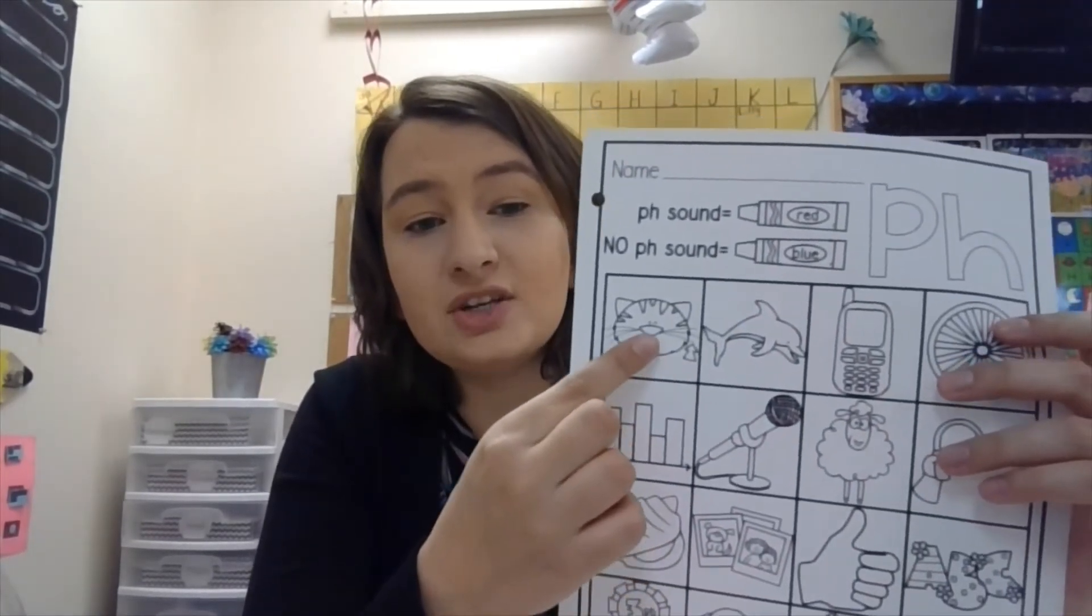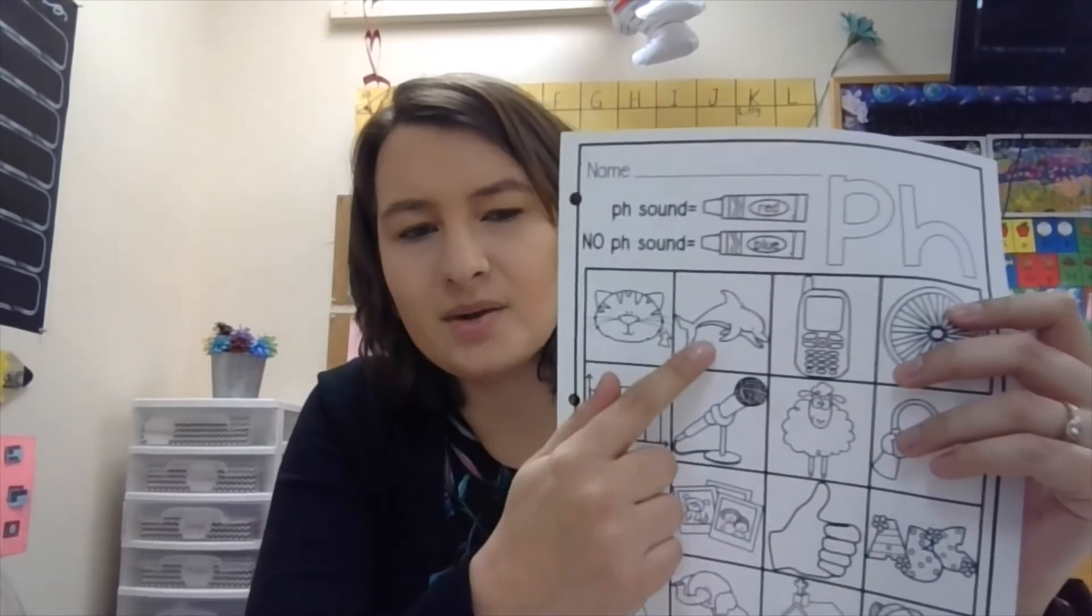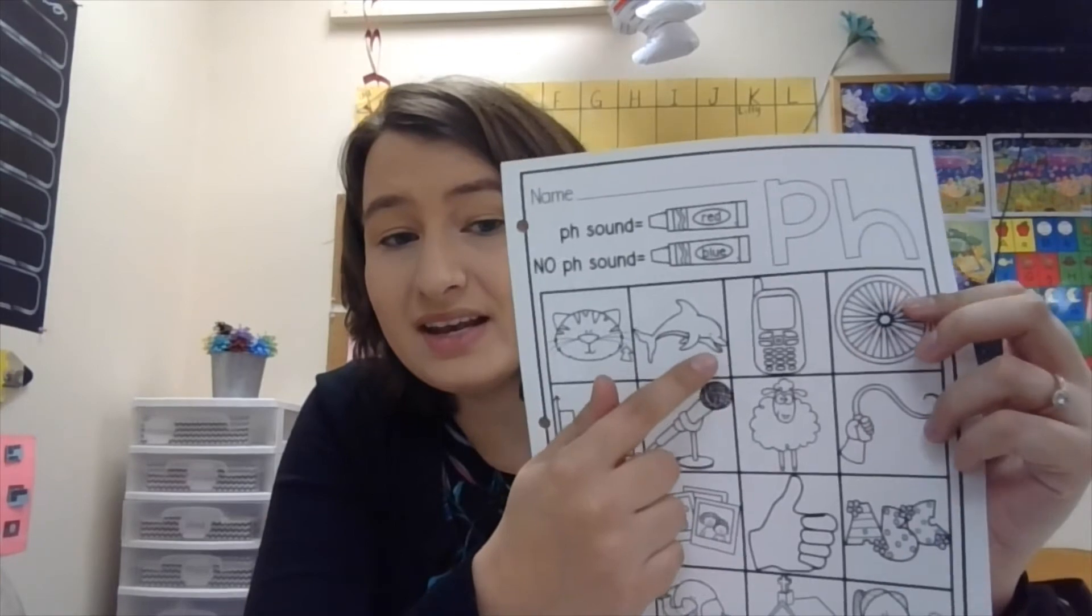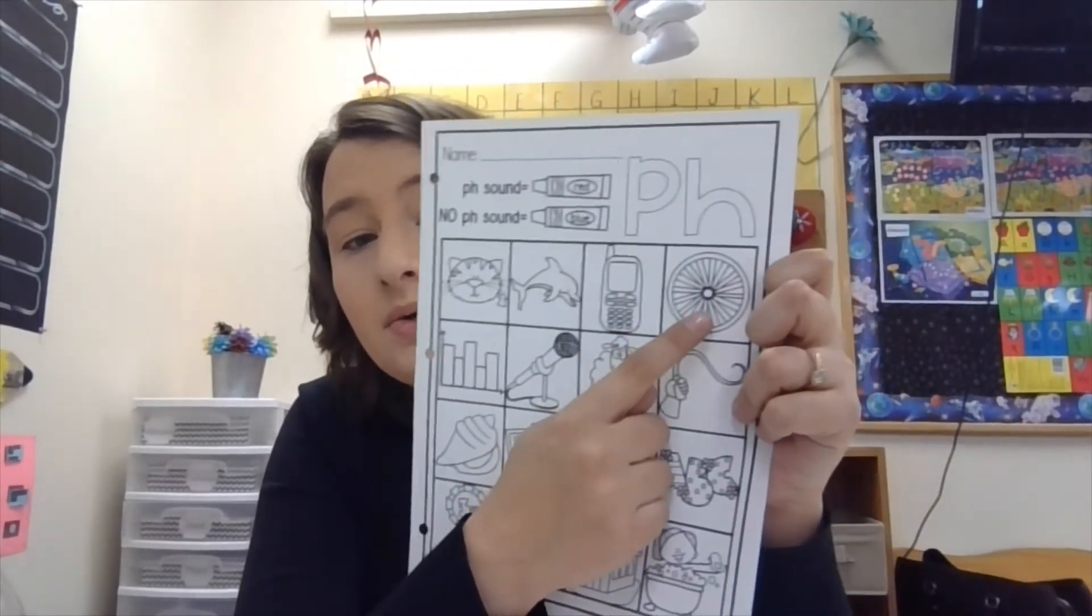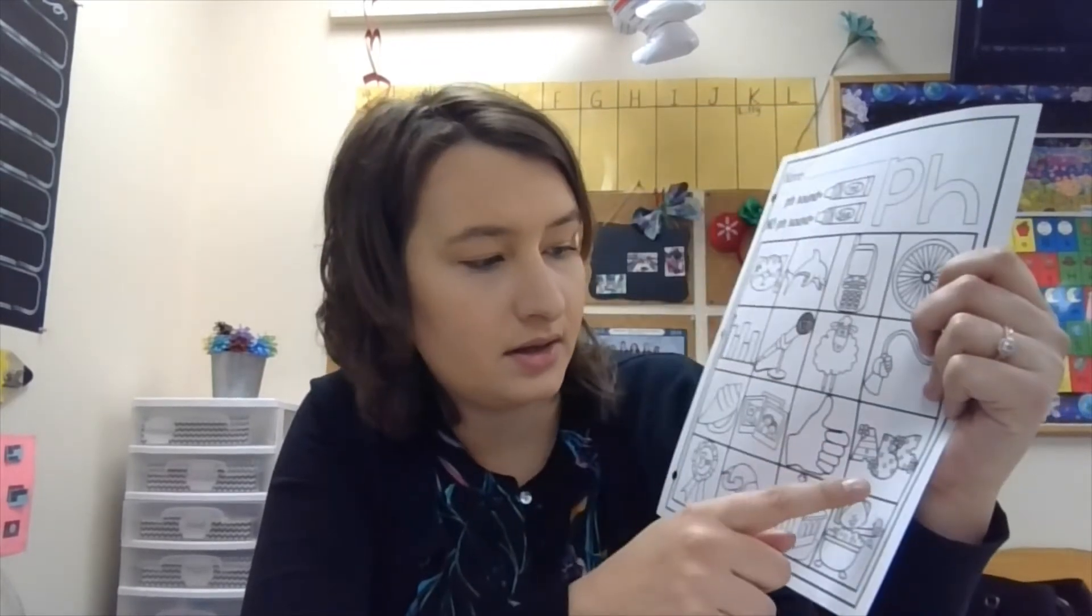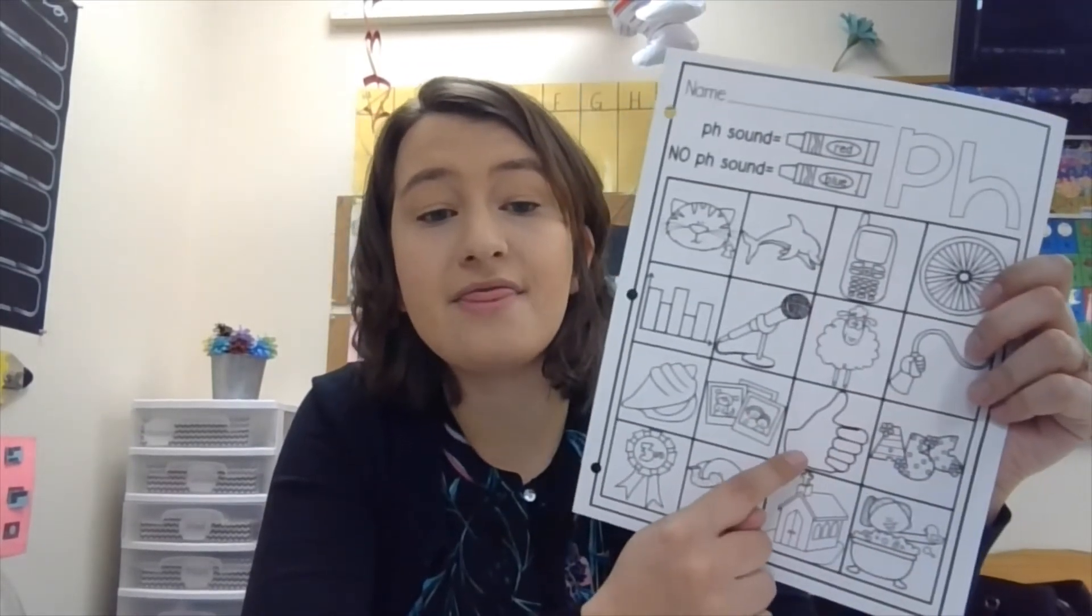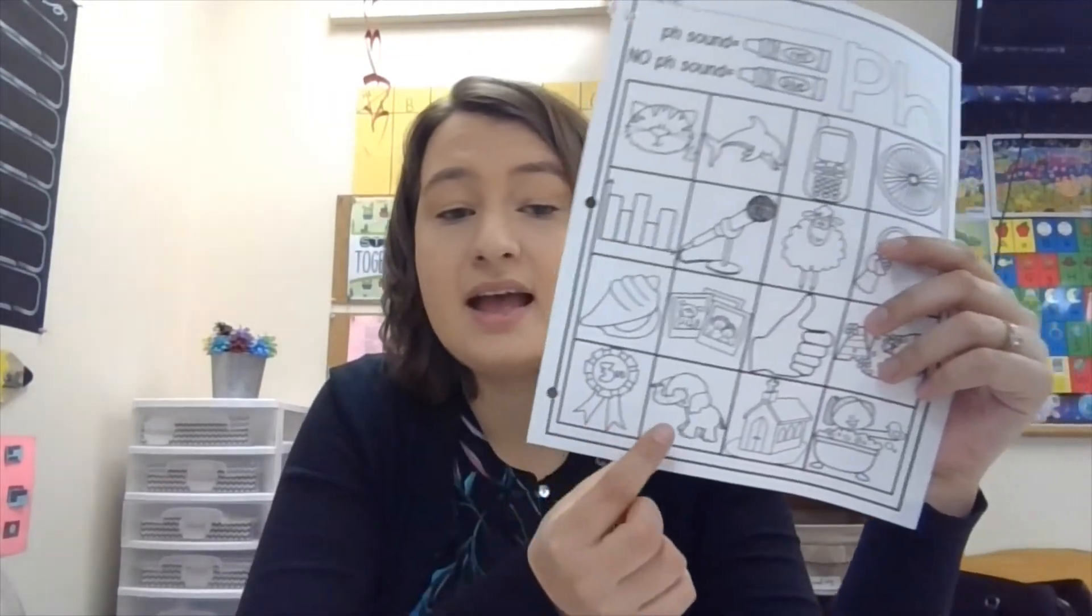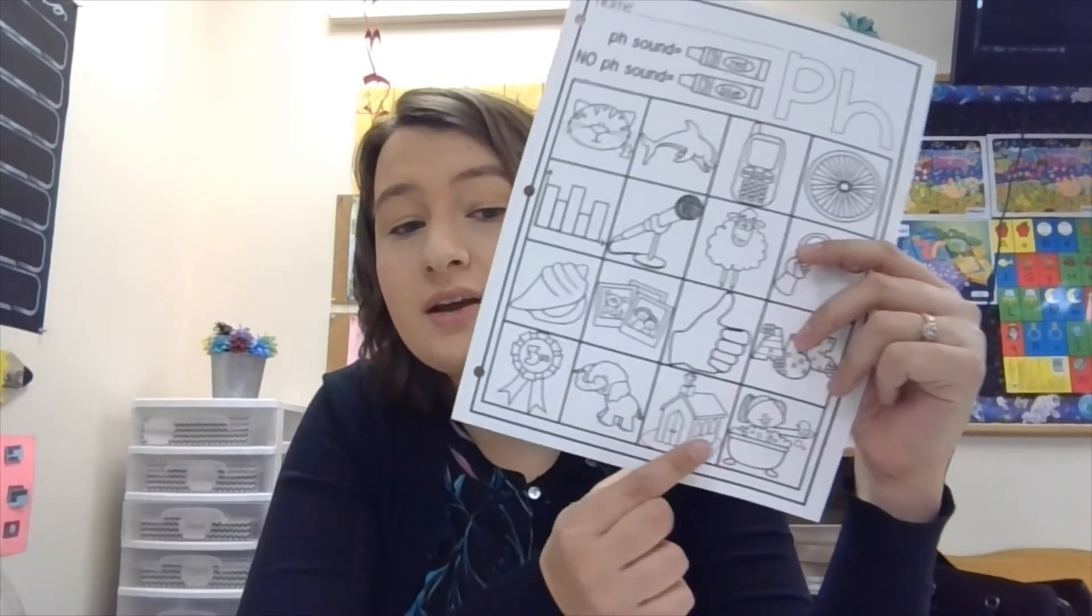This is going to whiskers. Do you hear a PH in whiskers? What about dolphin? Is there a PH in dolphin? Telephone, wheel, whip, sheep, microphone, graph, alphabet, thumb, photo, shell, ribbon, elephant, church, bath. Go ahead and color all those. They're blue or red. When you're done, so pause the video now. Come back when you're done.